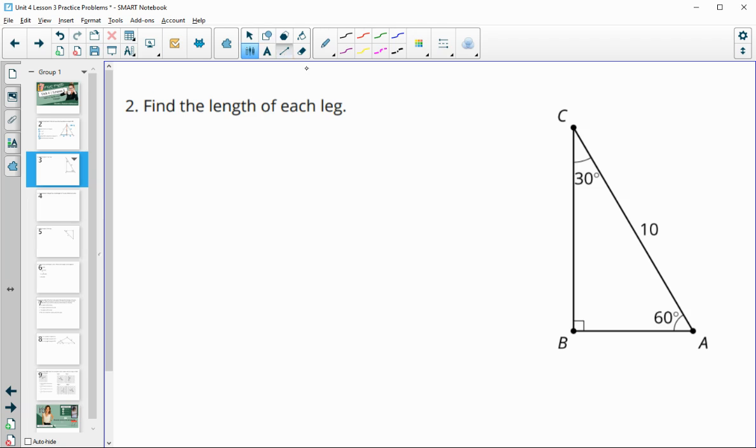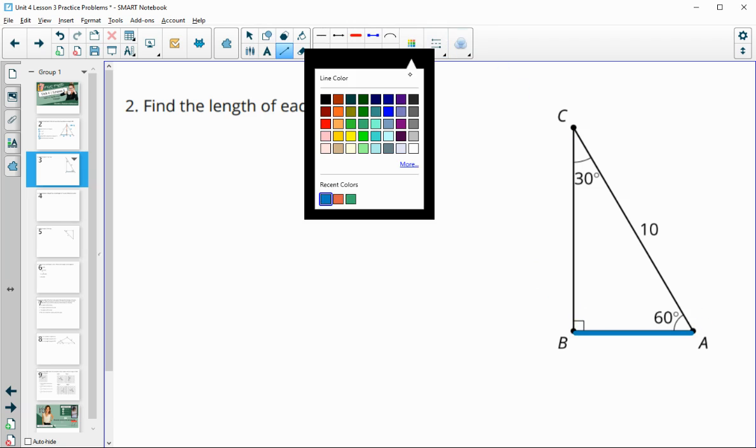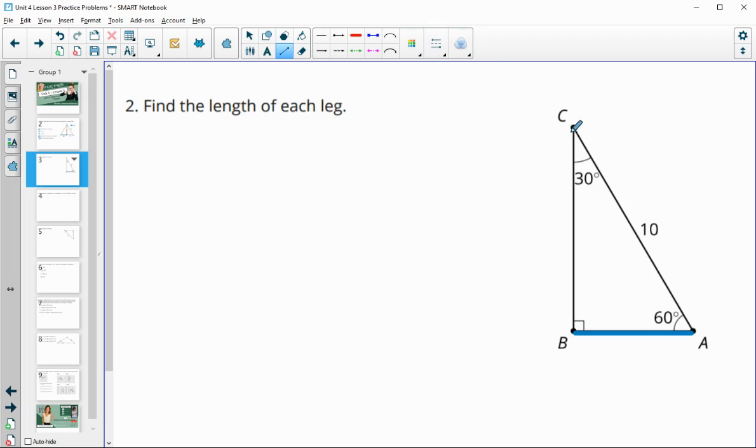Number 2, find the length of each leg. So we know that this one is always half of the hypotenuse. And then we know that this one is the square root of 3 times longer than the blue one. So the blue one is 10 divided by 2, which is 5.